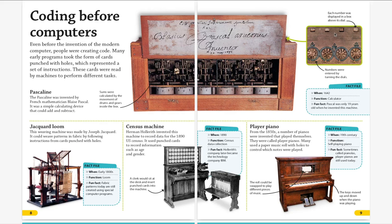There used to be another machine called the Jacquard Loom. This weaving machine was made by Joseph Jacquard. It could weave patterns in fabric by following instructions from cards punched with holes. Isn't that cool? Yeah, it's like a 3D machine — you put some code in it and it's going to weave the fabric for you. It looks like a 3D printer.